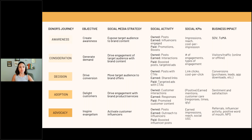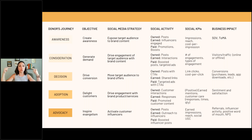Consideration is generating demand — educating your audience on what you do and the impact you provide. Here the social KPI is number of engagements, and the business impact is visitors and traffic to your website. The main one most of us want is donations — that's the decision phase, where we want to drive conversions. The social number you should track there is link clicks: how many clicks do you get on social posts driving people to your website, and how many convert to donate?